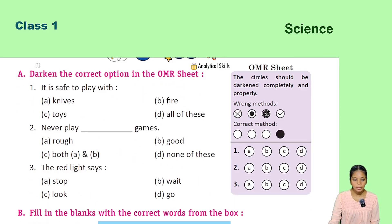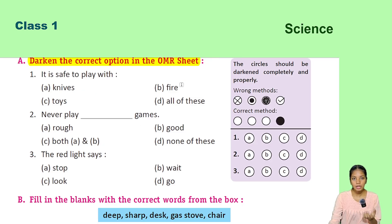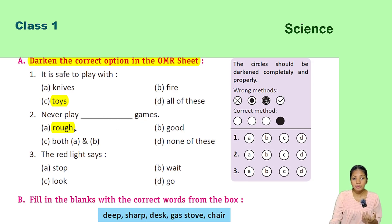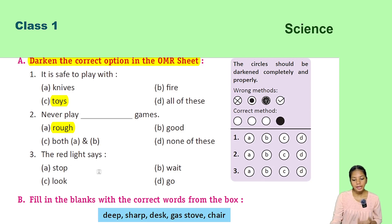Let's try some exercises. Darken the correct option in the OMR sheet. It is safe to play with — toys. We can play with toys. We should never play rough games. The red light says — stop.